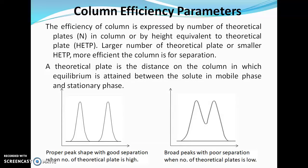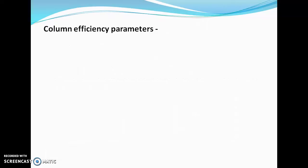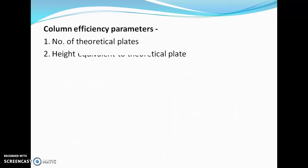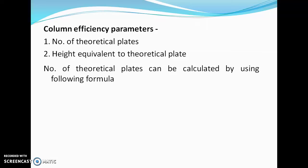If the number of theoretical plates is less or HETP is more, the peak will be broad, and these broad peaks will overlap with each other, resulting in poor separation. The two column efficiency parameters are: number of theoretical plates (N) and height equivalent to a theoretical plate (HETP).